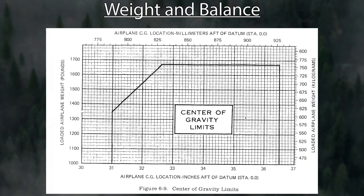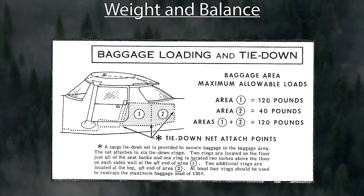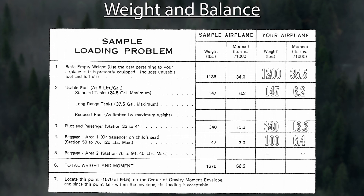Let's run through one more example. The airplane weight is 1,200 pounds with a moment of 35.5. We'll use the same fuel numbers: 147 and 6.2. Pilot and passenger: 340 pounds and 13.3 on the moment. We'll also put 100 pounds in the baggage compartment — make sure you check the notes, as this airplane shows 120 pounds max. Following the dashed line for baggage area 1, 100 pounds of baggage gives about 6.4 on the moment. Adding everything up: 17.87 weight and 61.4 moment.